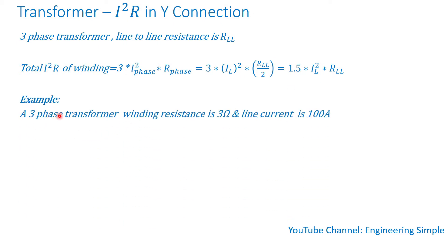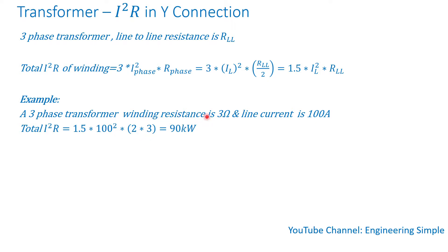Here's an example: a three-phase transformer where the winding resistance is 3 ohms and the line current is 100 amps. Applying the equation, the total I squared R equals 1.5 times 100 squared times 2 times 3. I'm given winding resistance of 3 ohms, but I need the line-to-line resistance, which is 2 times the phase resistance — that's why I multiply by 2. Carrying out the calculation gives 90 kilowatts.